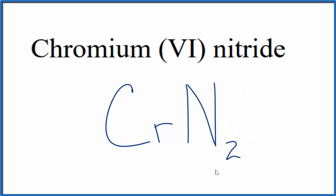If you were given this formula and asked to write the name, you know that the nitrogen, the nitride ion, is 3-, and you have 2, so the chromium has to be 6+. So you'd write that 6 there in the name, chromium (VI) nitride.